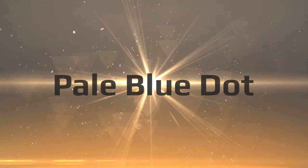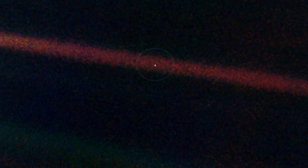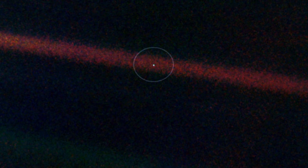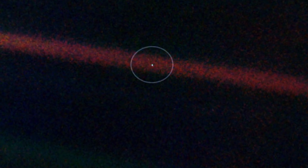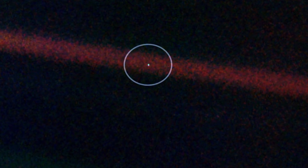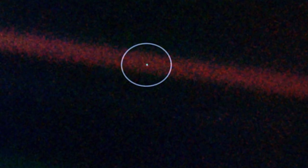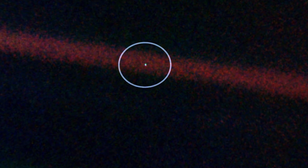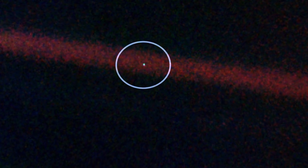Pale Blue Dot. In 1990, supposedly at the request of Carl Sagan, NASA turned the Voyager 1 spacecraft around for one last look at home, capturing the pale blue dot of Earth, appearing smaller than a single pixel, from 3.7 billion miles, 6 billion kilometers away.